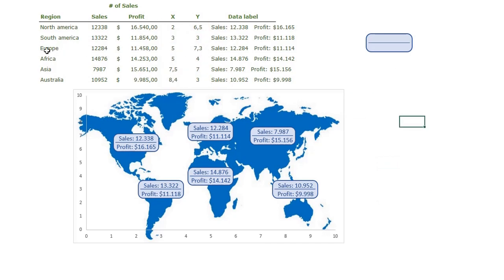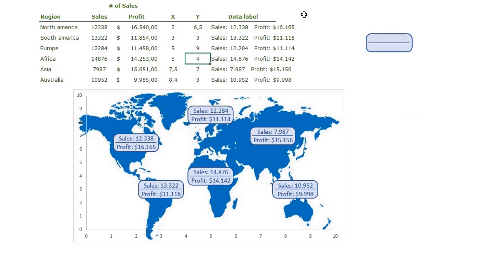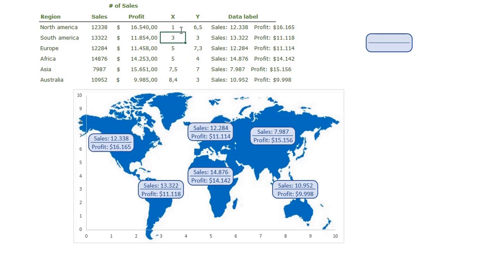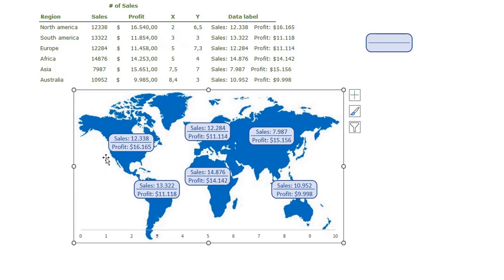I already determined the position of each badge, but let me show you how that works. For Europe, if I want the badge higher I adjust the Y value to 9 and you see it moves up. If I adjust it to 4, it moves down — so I put it back to 7.3 where it sits nicely over Europe. For America, changing the X value from 2 to 1 moves it to the left. So the X value controls horizontal alignment and the Y value controls vertical alignment.